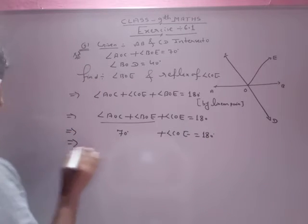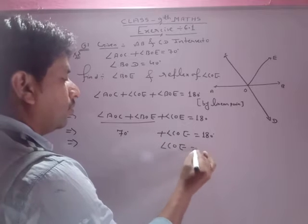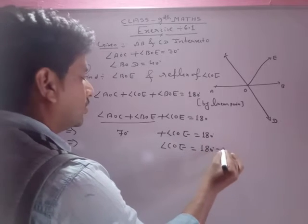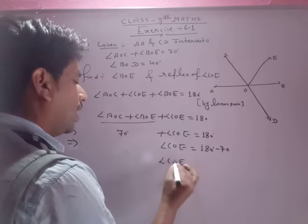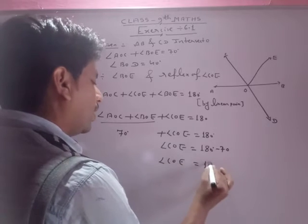तो angle COE equals to 180 minus 70, तो angle COE जो मिल रहा है हमी, वो मिल रहा है 110 degree.